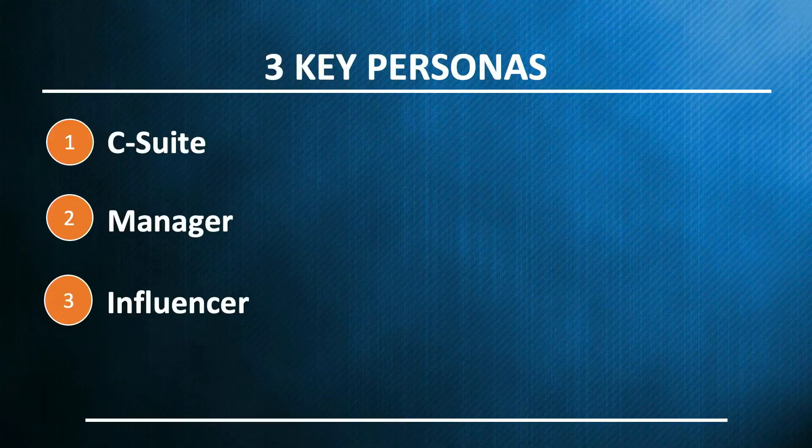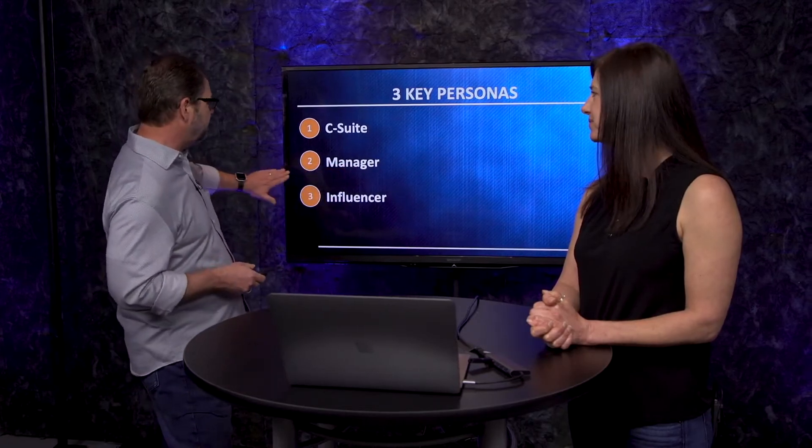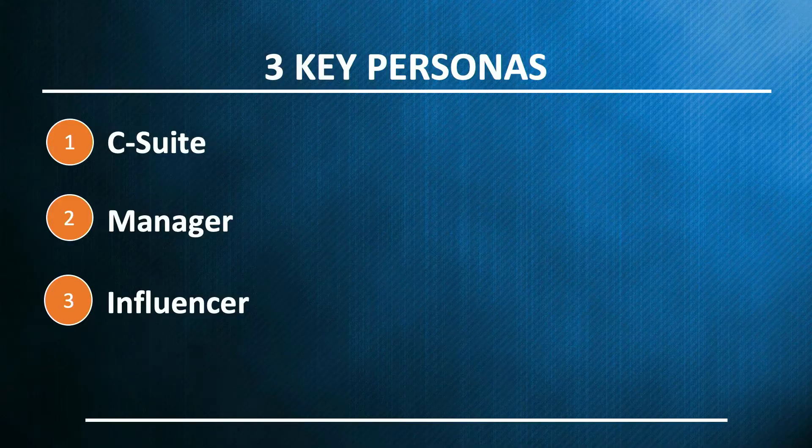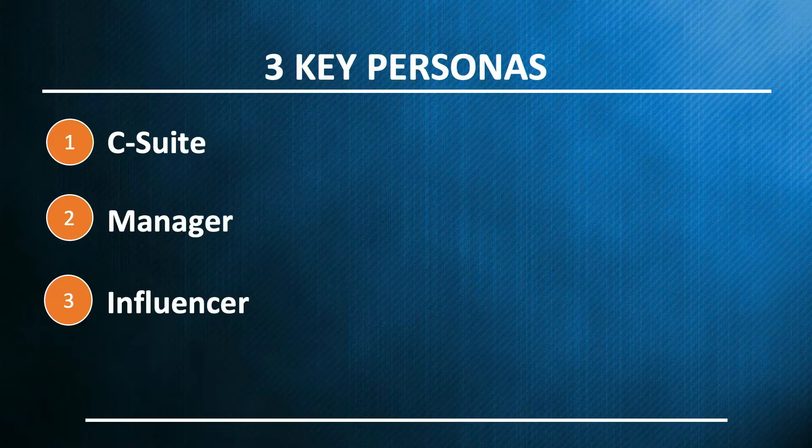In the B2B world there are really three key personas. The first is the C-suite — typically the decision maker. When messaging to them, we want to talk about strategy, profit, and cutting expenses. The next is the manager — typically our point of contact in the sales process, the one who will implement whatever product or solution you're recommending. And finally, the influencer — the person who might get you introduced into the organization but also has to live with whatever your product or solution is. These three personas have totally different perspectives and needs related to your product.